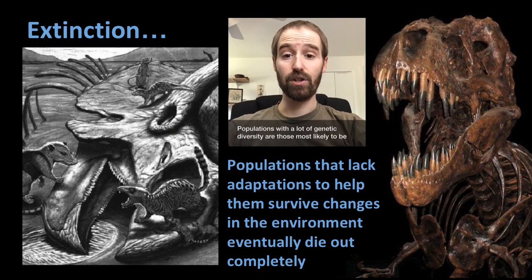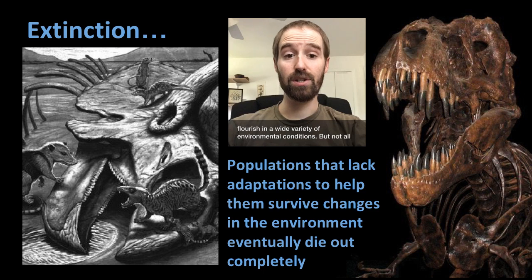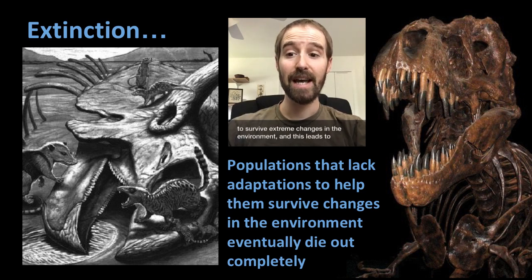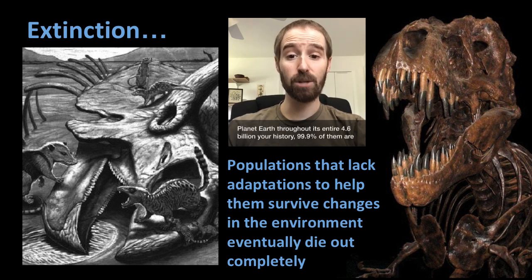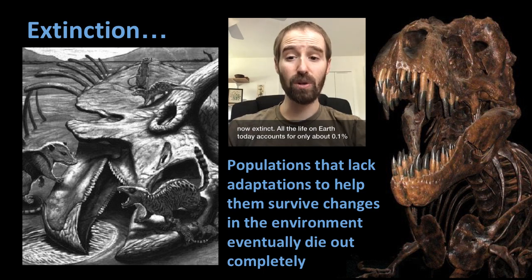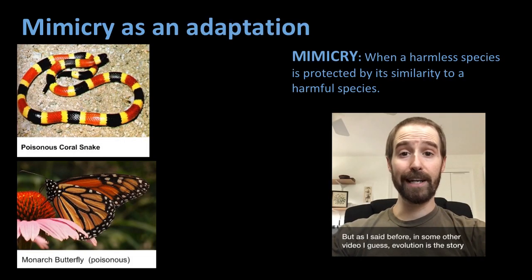Populations with a lot of genetic diversity are those most likely to be able to adapt to changing environments, and to thrive and flourish in a wide variety of environmental conditions. But not all populations are lucky enough to possess the adaptations necessary to survive extreme changes in the environment, and this leads to extinction. Countless species have gone extinct throughout geologic history, unable to adapt to Earth's ever-changing conditions. In fact, scientists estimate that out of all the species that have ever existed on planet Earth throughout its entire 4.6 billion year history, 99.9% of them are now extinct. All the life on Earth today accounts for only about 0.1% of the total biodiversity this planet has ever seen. Evolution is the story of the survivors.